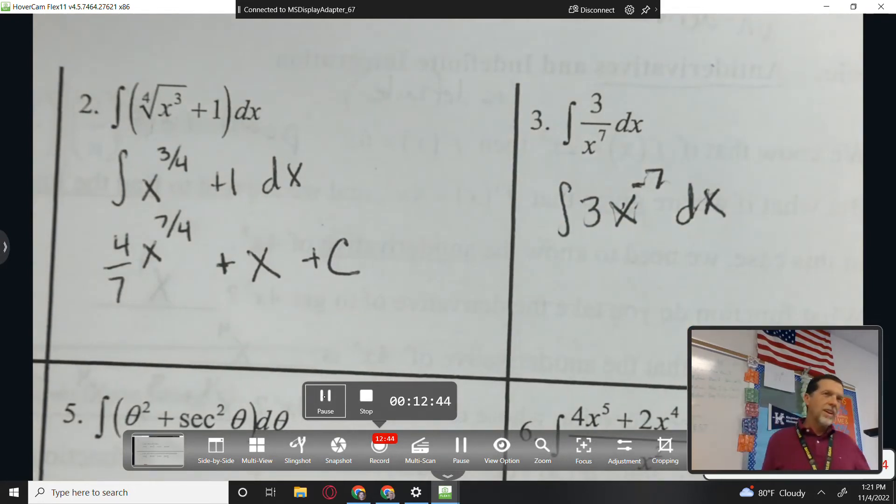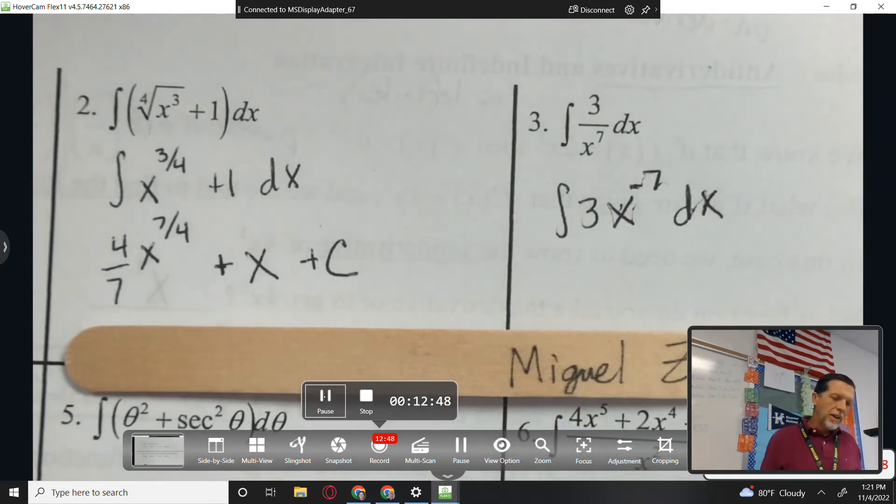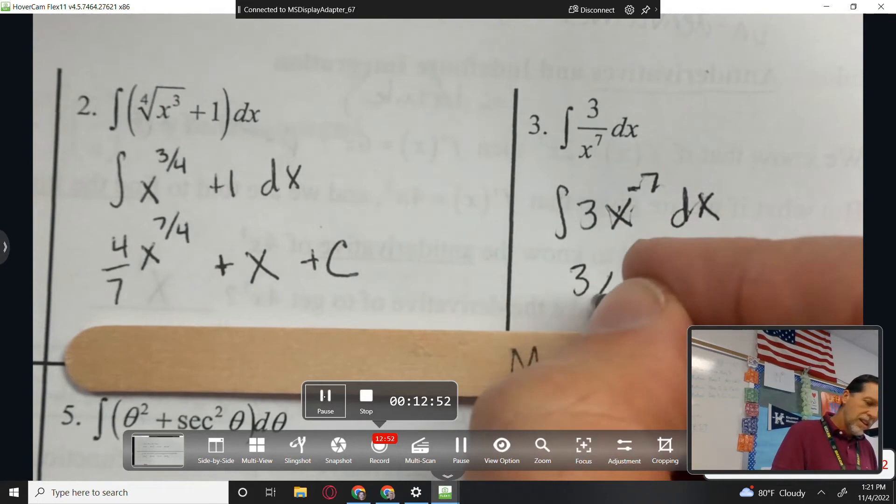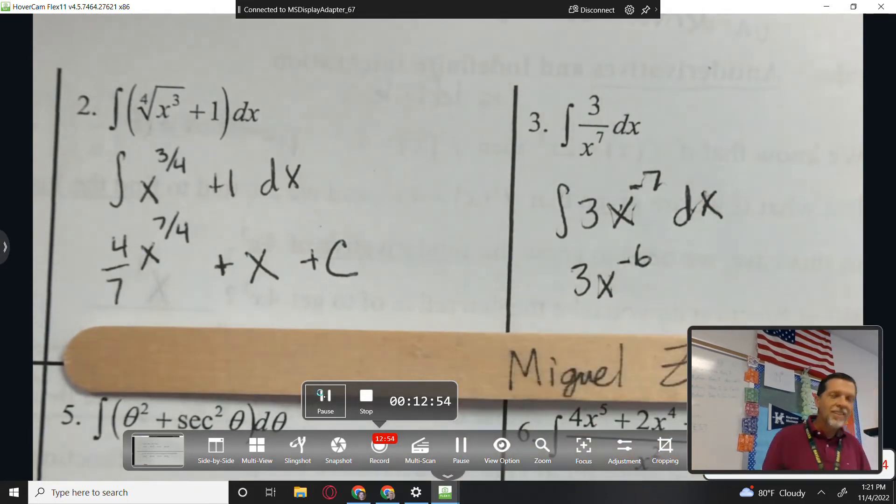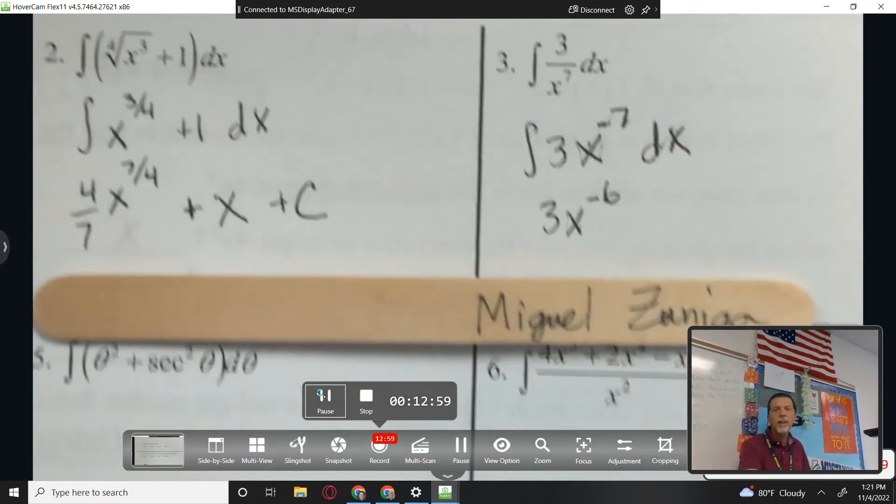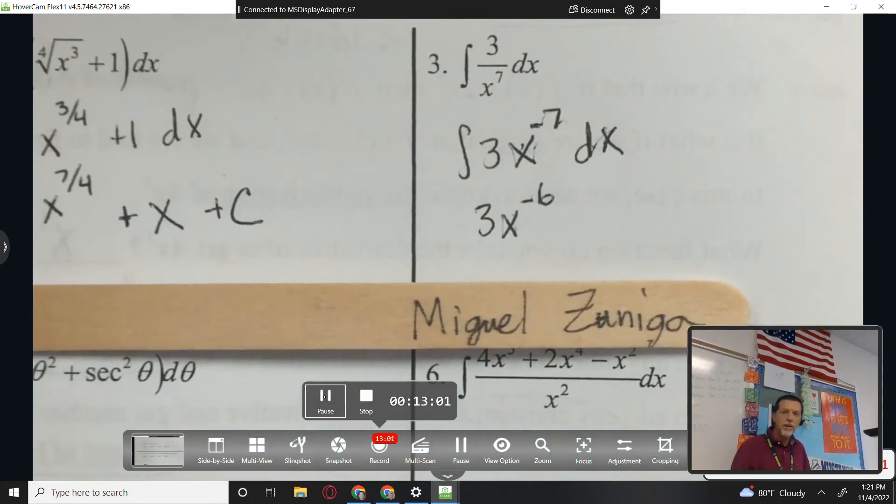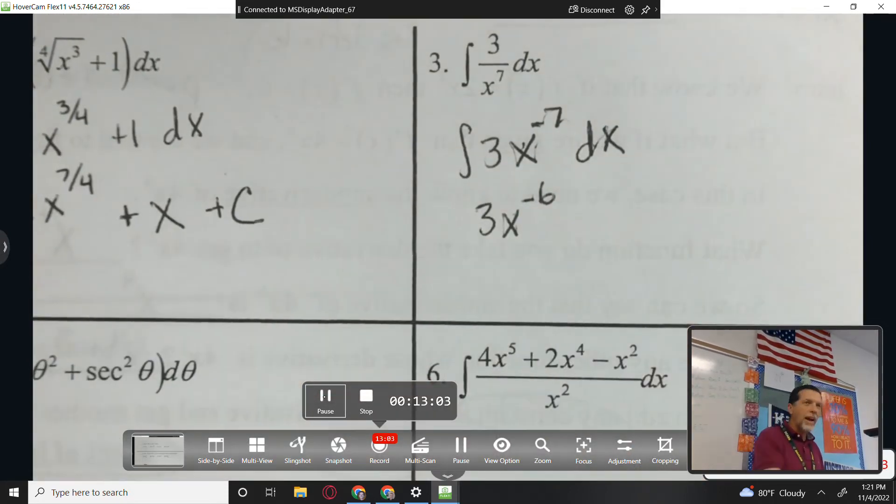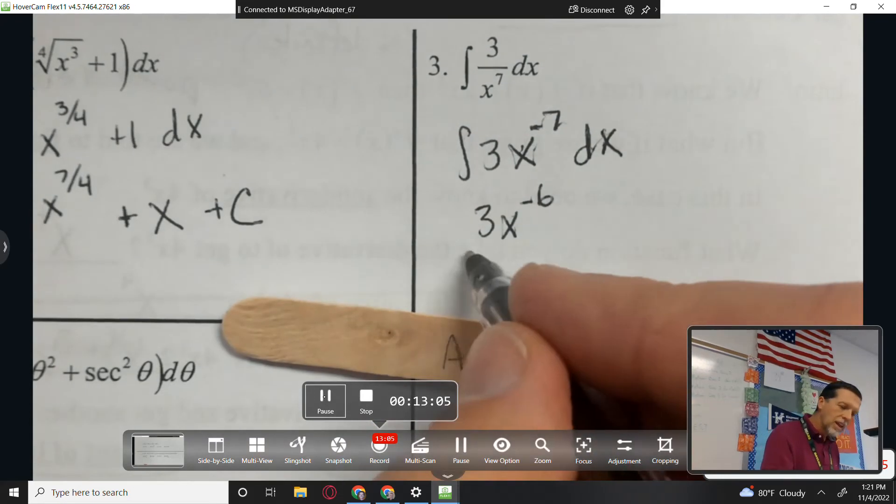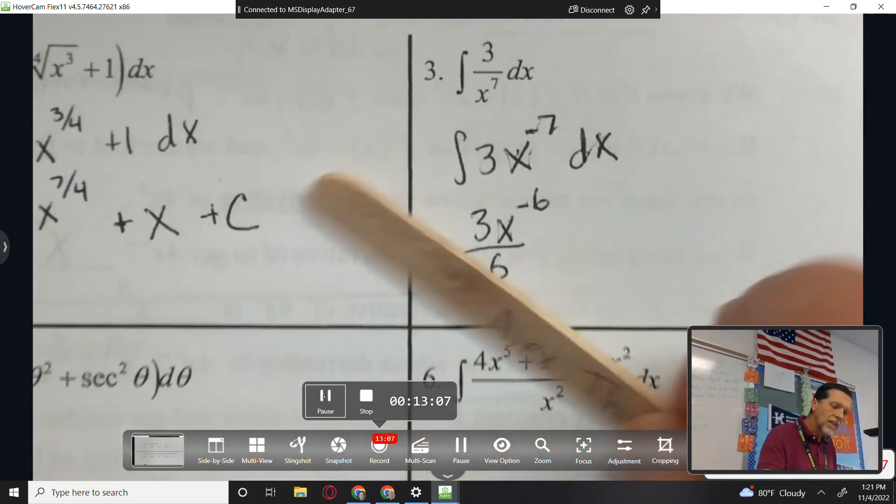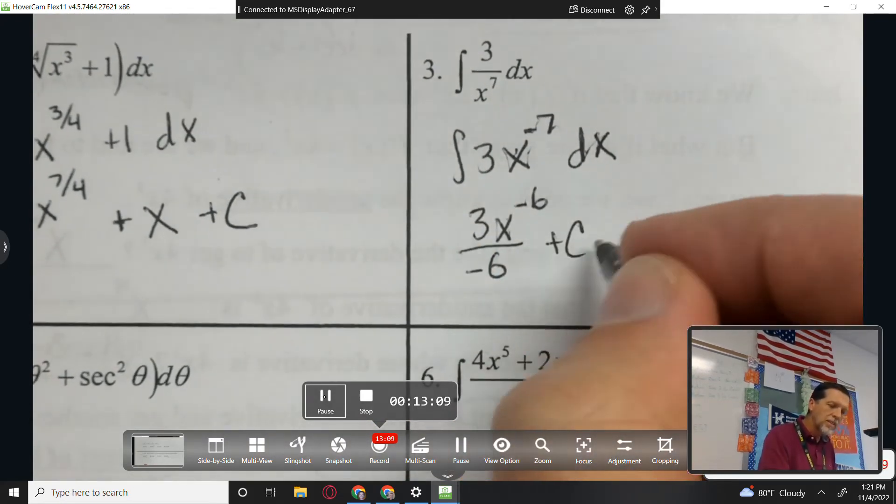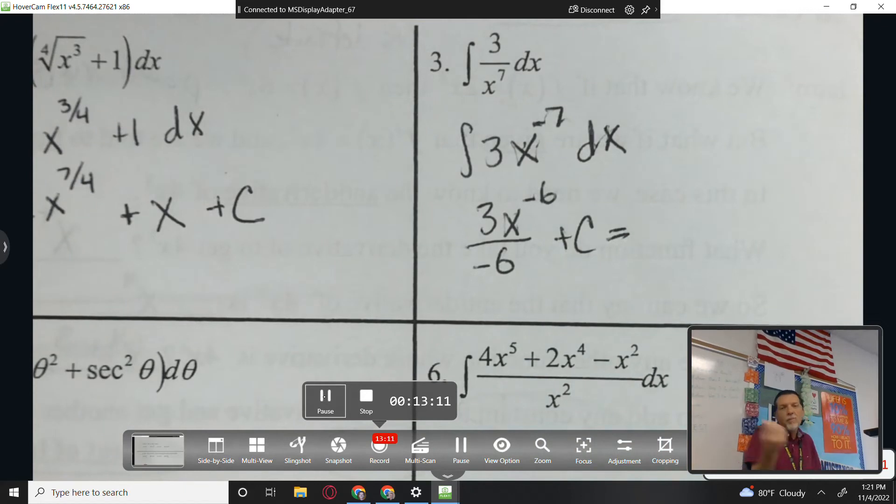Okay, so I've got to up the power by one. Miguel, what do I get when I up the power by one? Negative six. Good. So some people mess up with negatives because they think one more than negative seven is negative eight. But increase it by one. And then divide by, how do I need to divide by? Negative six. And then plus c. And that's a perfectly fine answer.